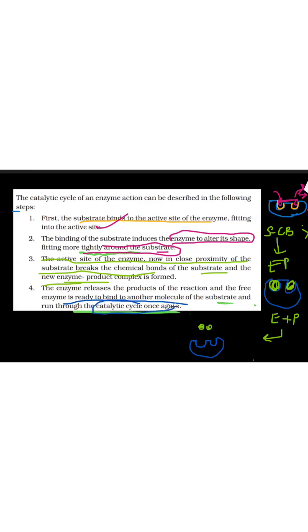So this part explains how a substrate interacts with the enzyme's active site. First it is tightly bound, the enzyme's shape alters, and as it is tightly bound, the chemical bond of the substrate is broken — so it can attach to another molecule and the catalytic cycle can continue. I really hope these lines from NCERT have been very well understood. Thank you so much. Grow together. I'll meet you soon.